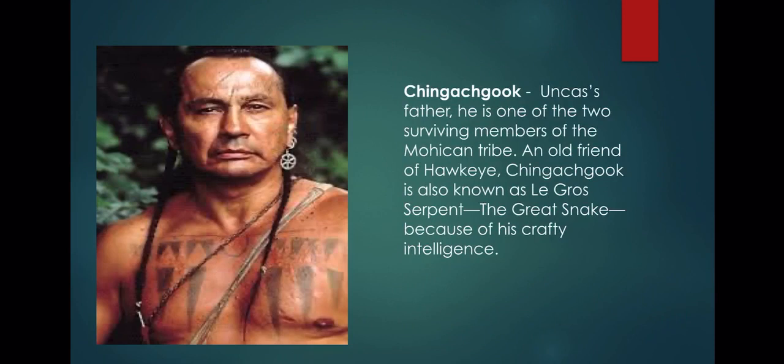Chingachgook is Uncas's father and one of the two surviving members of the Mohicans tribe, and an older friend of Hawkeye. Chingachgook is also known as Le Gros Serpent, the Great Snake, because of his crafty intelligence.